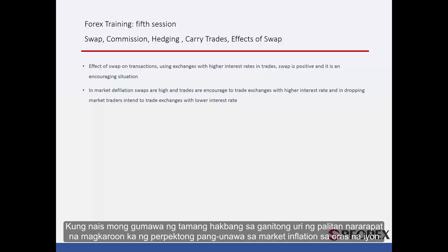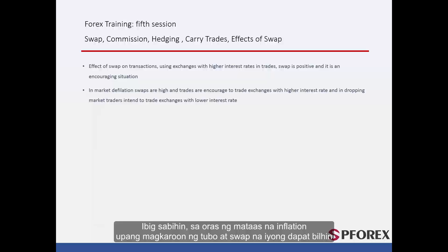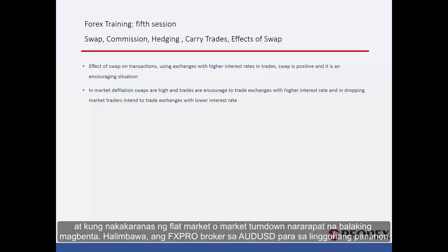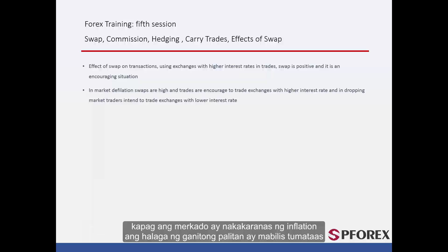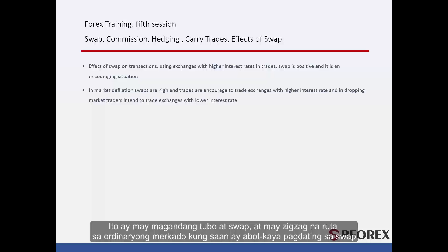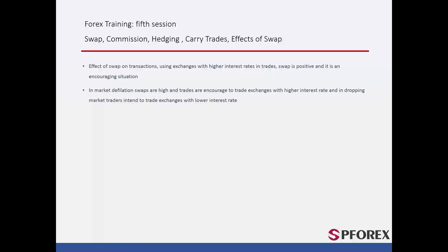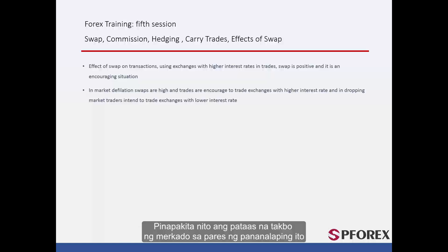If you want to make a right move with this type of exchange, you must have a perfect understanding of market inflation at the time. At the time of high inflation, in order to gain profit and swap, you should buy, and when experiencing a flat market or market downturn, you should intend to sell. For example, the FXPro broker in Australian against US dollars for weekly periods — when the market has experienced inflation, the value of this exchange is rising rapidly. It has a pretty good profit and swap, and has a zigzag routine in ordinary markets, which is affordable considering the swaps. However, in market deflation, its value will rise again after some sharp decline, showing an upward market trend tendency in this currency pair. That concludes this session. Until next time, take care.